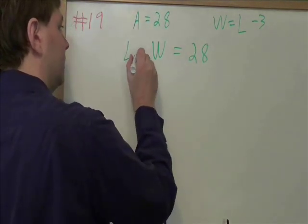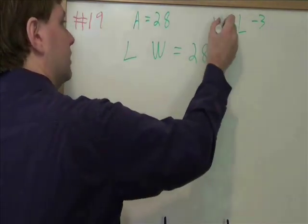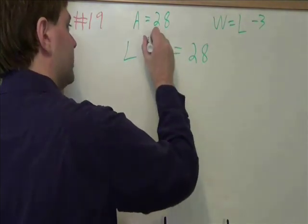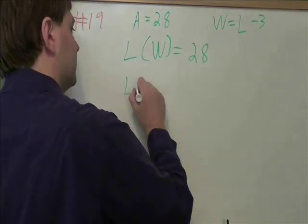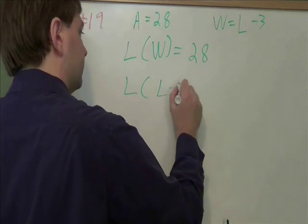Now that we've done that, we need to get this to just have one variable in it. Since we know what w is, w is l minus 3, we replace the w with the l minus 3 that it equals.